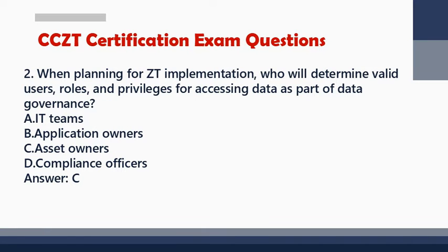Question 2: When planning for ZT implementation, who will determine valid users, roles, and privileges for accessing data as part of data governance? A. IT Teams. B. Application Owners. C. Asset Owners. D. Compliance Officers. Answer: C.